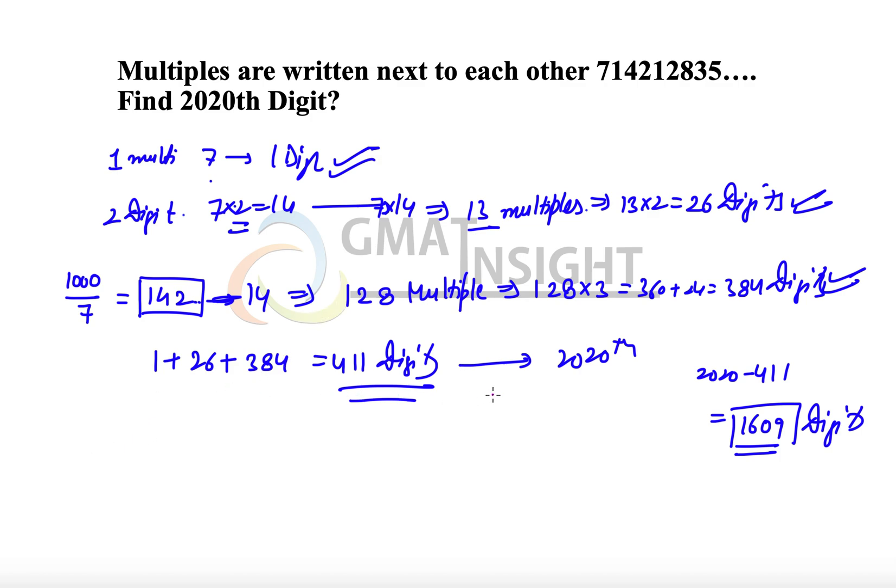Now every multiple of 7 after these 142 multiples will have 4 digits. So this 1609 must be divided by 4, because now we are reaching to that multiple that we want to count. So that will be equal to when 1609 is divided by 4, it is calculated as 402. So we have 402 multiples to count, and then we will have one more digit left.